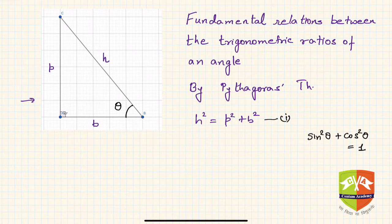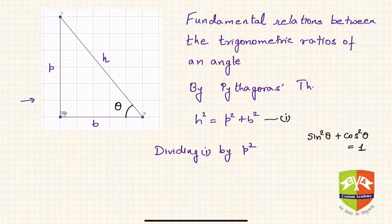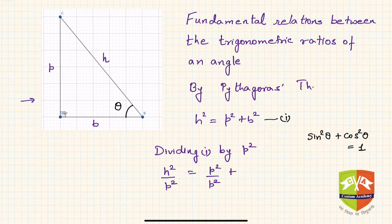This time, let us divide by p squared instead of h squared. Dividing by p squared, we get h squared upon p squared is equal to p squared upon p squared plus b squared upon p squared.